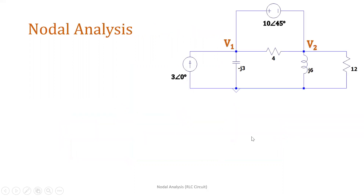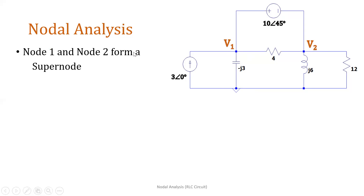Let's proceed with doing the analysis. As you can see here in our circuit, we have a 10∠45° voltage source which is in between two non-reference nodes. This means that this forms a supernode — so node 1 and node 2 form a supernode.